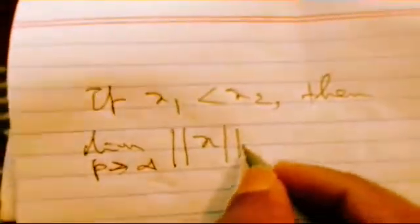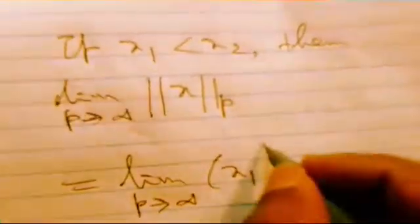Let us watch another condition. If x_1 is less than x_2, then we have limit as p tending to infinity of norm of x_p, which will be the limit as p tending to infinity. We are putting the same condition: x_1 to the power p plus x_2 to the power p, whole to the power 1 by p.